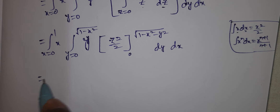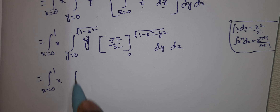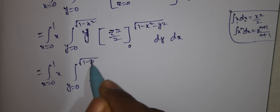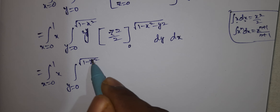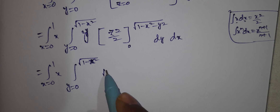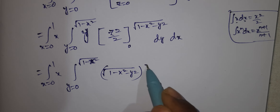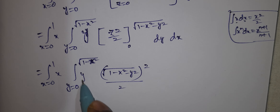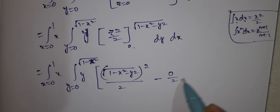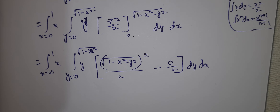Applying the limits, the upper limit gives [√(1-x²-y²)]²/2, which simplifies as the square root and square cancel, giving (1-x²-y²)/2. The lower limit is 0, so 0²/2 = 0. Therefore we get (1-x²-y²)/2 into dy dx.